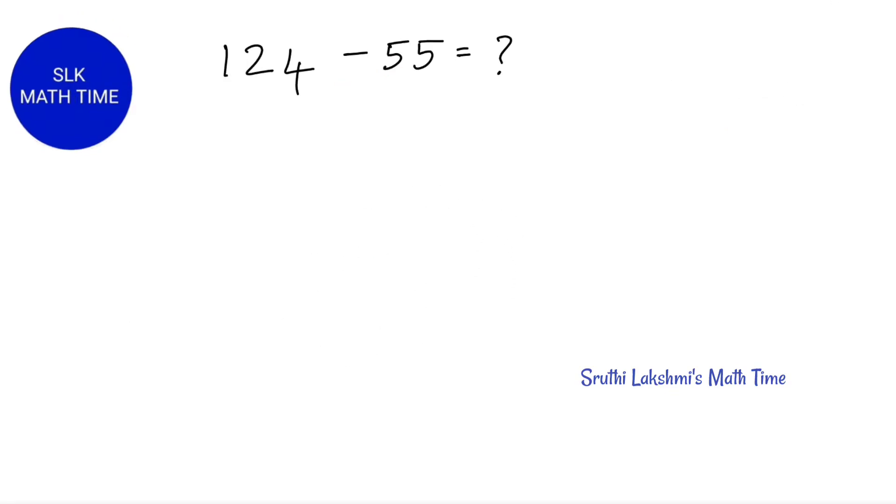Let's see another equation which is 124 minus 55. So here the least number is 55. So now we find the closest multiple of 10 to the number 55 which is 60. So we do 55 plus 5 which equals 60.